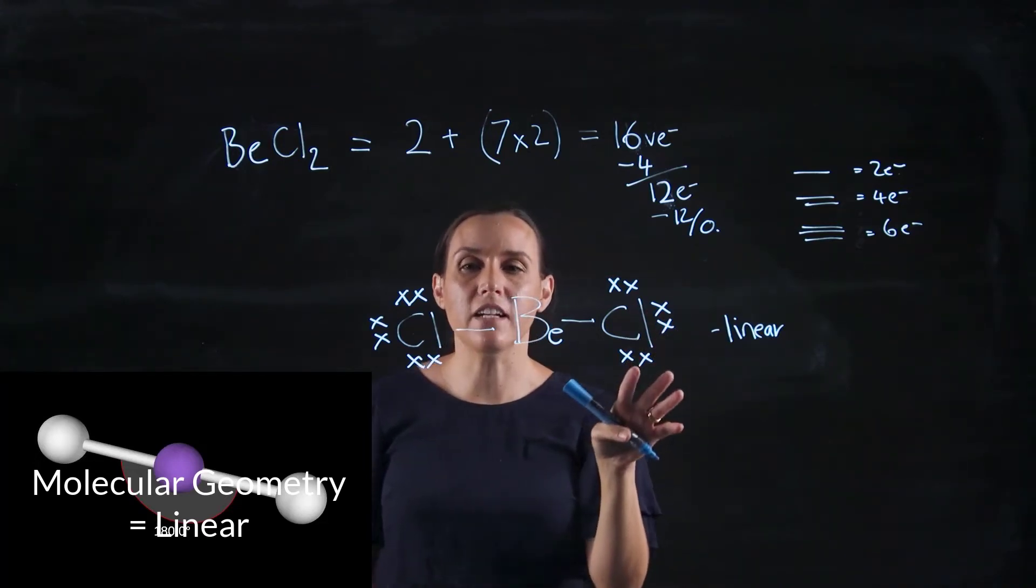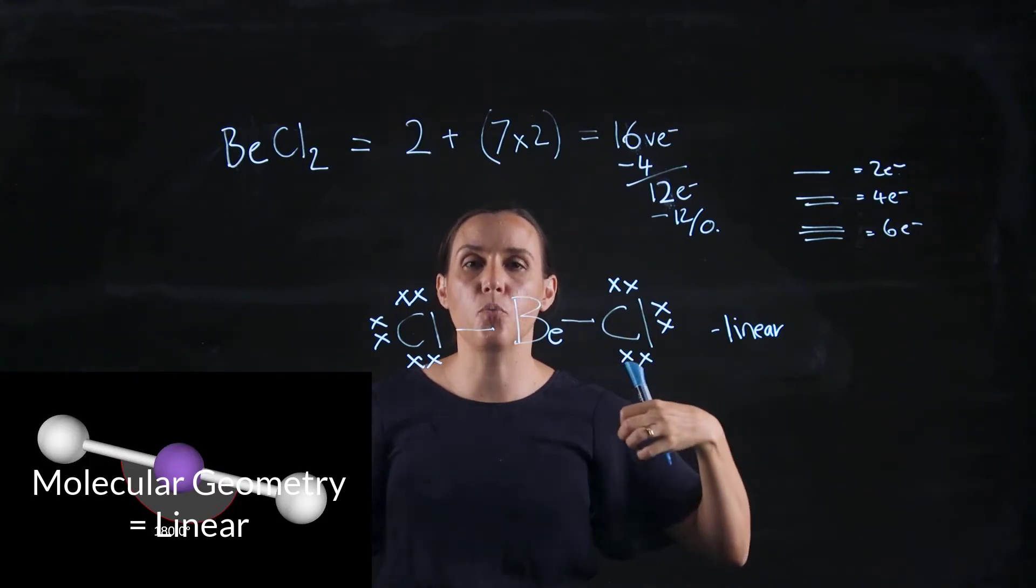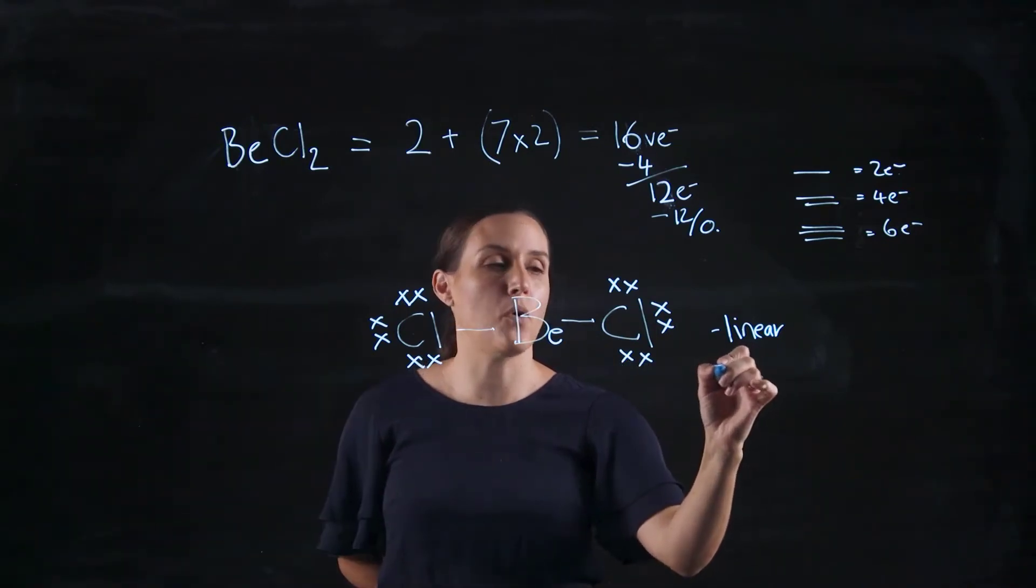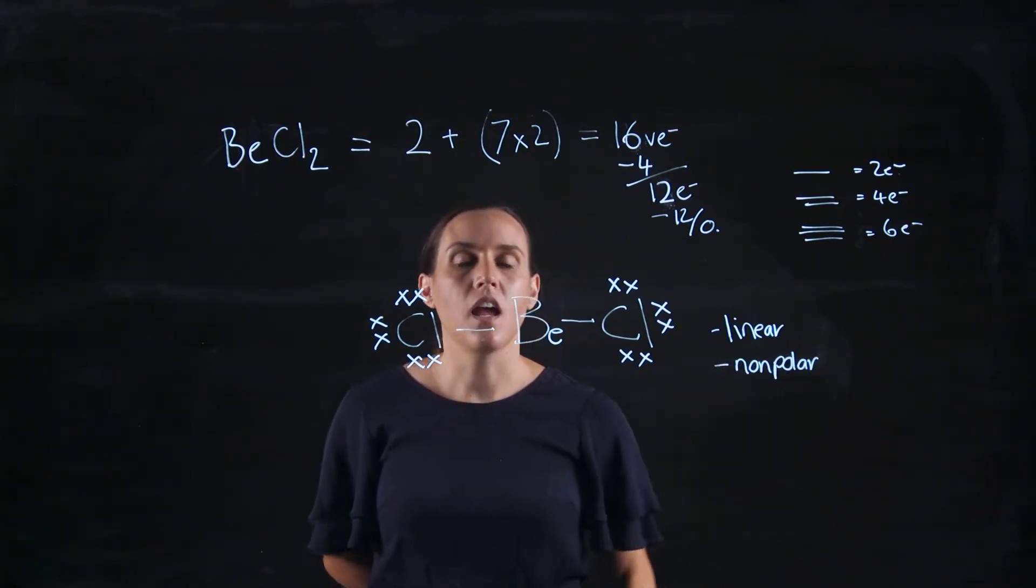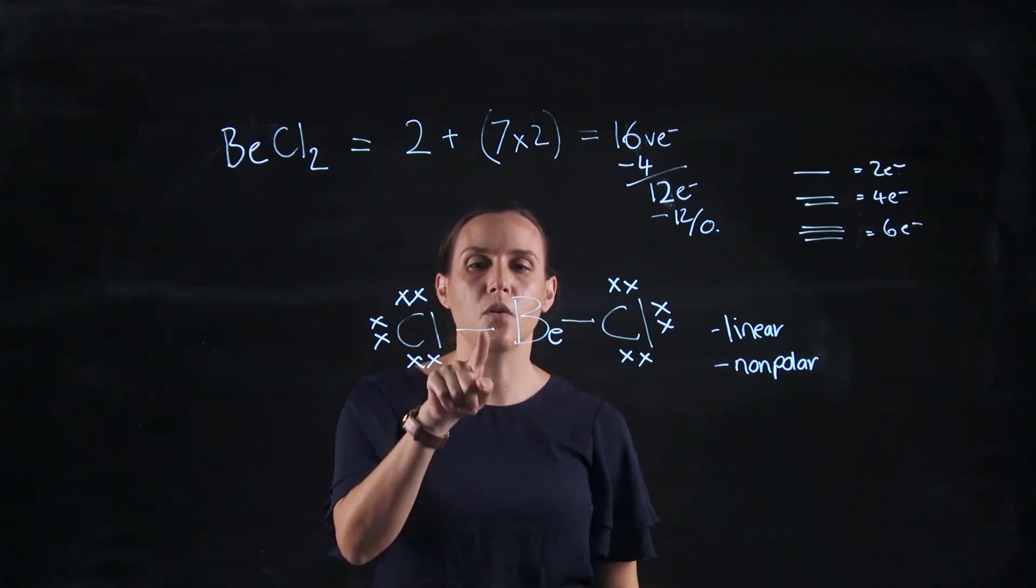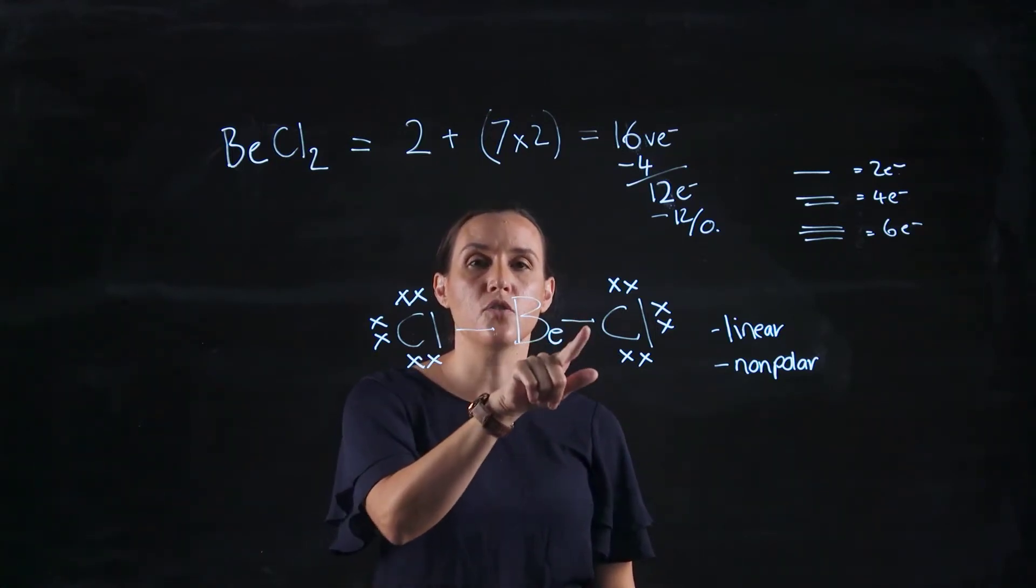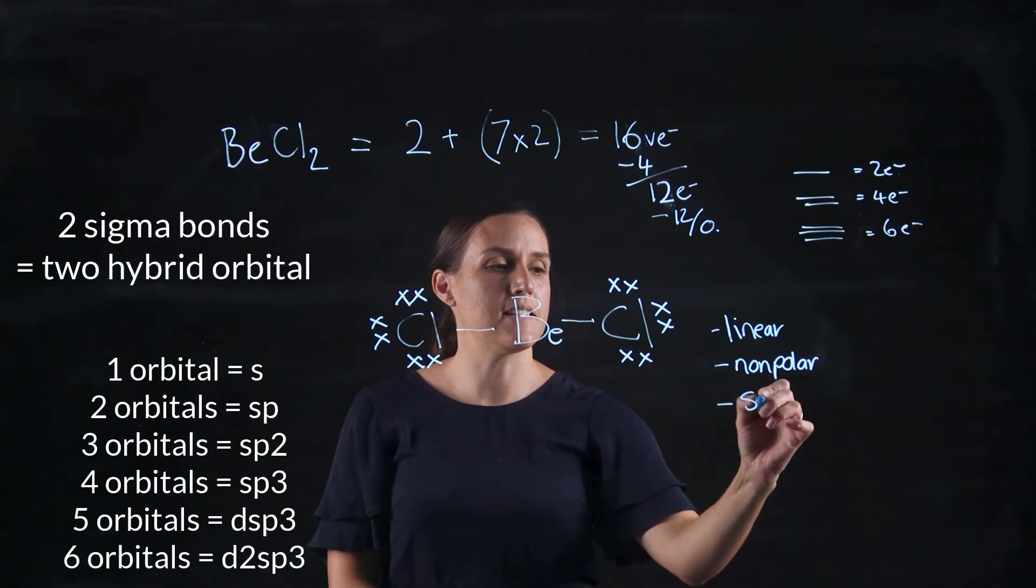Now the polarity, you've got two chlorines that are the same. They're going to have equal pull on those shared electrons. So it would be non-polar. And the hybridisation of the central beryllium would be needed to make one, two single bonds. So it would be an sp.